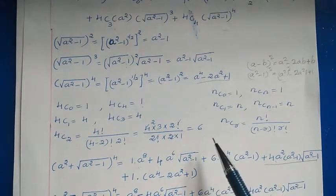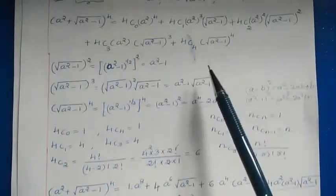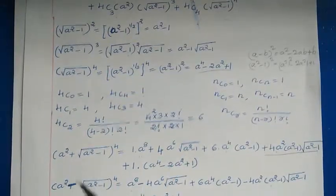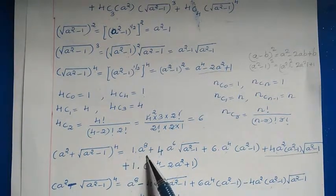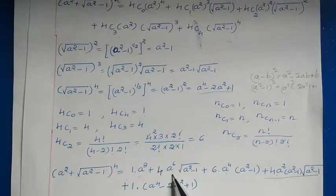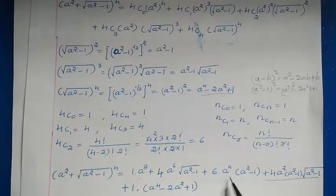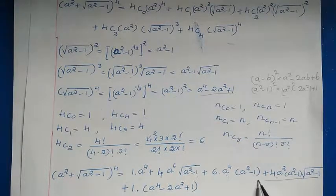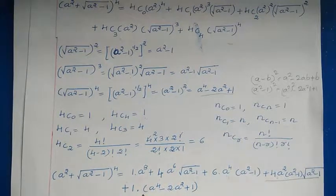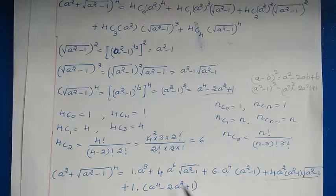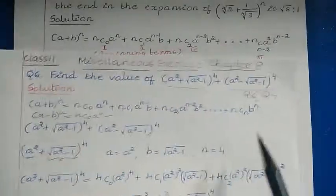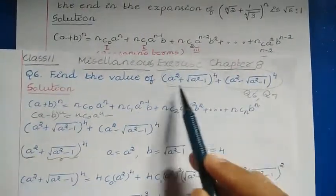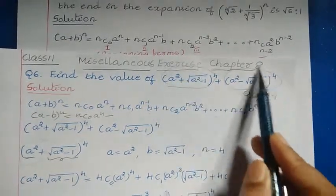Now substitute all values into the expansion. We get: (a² + √(a²−1))⁴ = 1·a⁸ + 4·a⁶·√(a²−1) + 6·a⁴·(a²−1) + 4·a²·(a²−1)·√(a²−1) + 1·(a⁴ − 2a² + 1). We have now found the value for the first expression. Next, we need to evaluate the second expression as well.